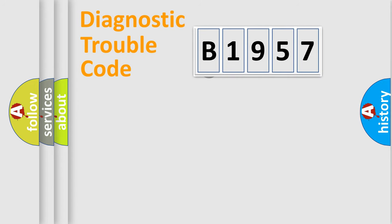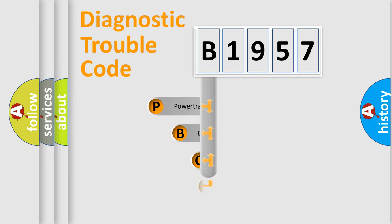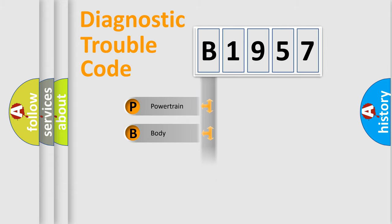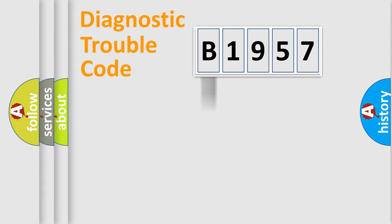Let's look at the history of diagnostic fault code composition according to the OBD2 protocol, which is unified for all automakers since 2000. We divide the electric system of an automobile into four basic units: Powertrain, Body, Chassis, and Network.